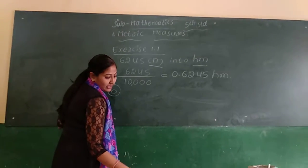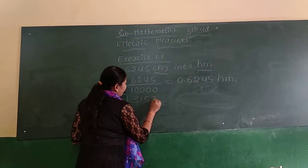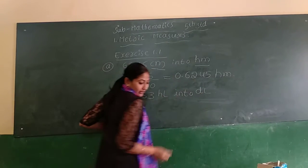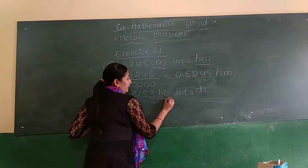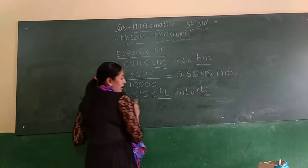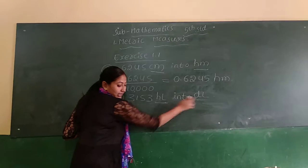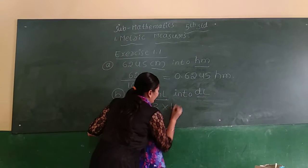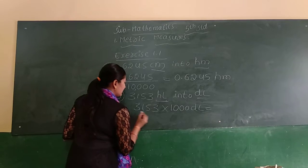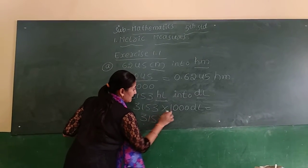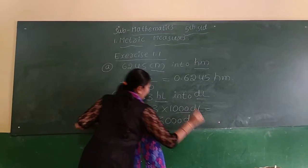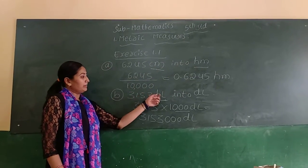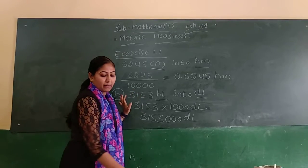Next problem: convert 3153 HL (hectoliter) into deciliter. Hectoliter is the bigger unit and deciliter is the smaller unit. So we convert from bigger to smaller — we multiply. We multiply by 1000, so we add 3 zeros: 3153 becomes 3,153,000 deciliters. Like this, we convert from smaller to bigger and from bigger to smaller using the chart.